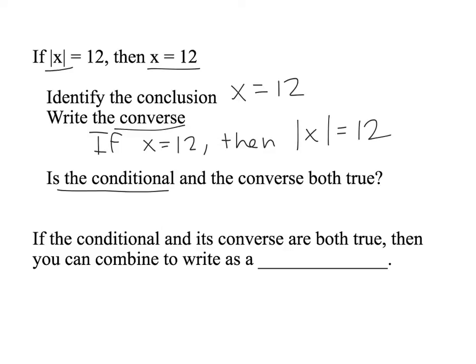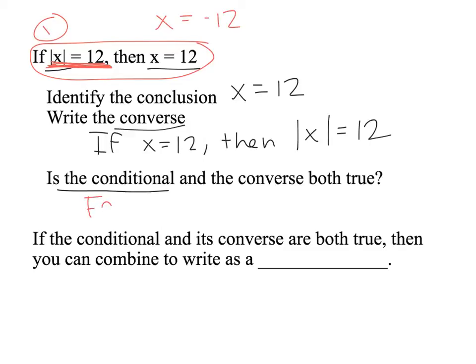Next: is the conditional true? Going back to the conditional — if the absolute value of x equals 12, then x equals 12 — that's actually false because x could also be negative 12. The converse is: if x equals 12, then the absolute value of x equals 12. That's true because the absolute value of 12 equals 12.